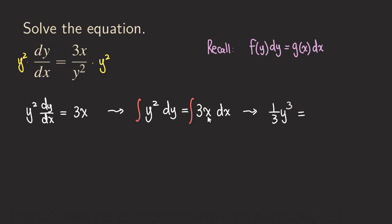And what do we get on the right-hand side of the equation? We're going to integrate the 3x, which will give us 3/2 x² plus k.